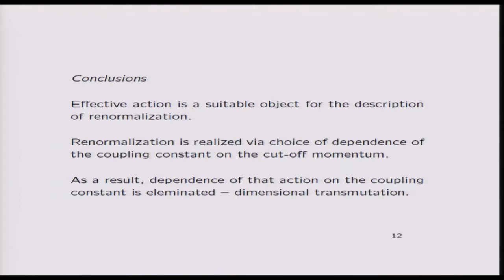Renormalization now in Yang-Mills. So it's also very important that the only infinities are proportional to classical action. So all the renormalization is reduced to renormalization of coupling constant. There is nothing else. And mass appears not as a massive term, but as a parameter when you do this regularization. So as I say, effective action is indeed very suitable object for description of renormalization. Renormalization is realized via choice of dependence of coupling constant on cutoff momentum. And as a result, dependence of action on coupling constant is essentially eliminated. You are getting only this new scale, but you can use units such that the scale is one. And then all Yang-Mills theory is just pure numbers. You calculate these numbers.